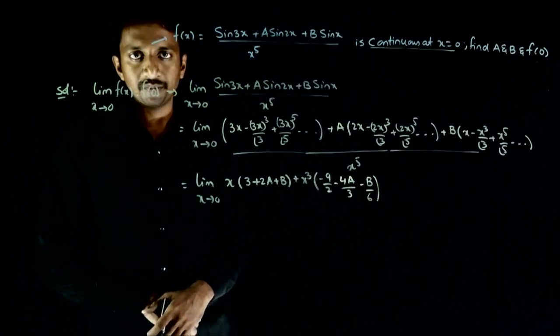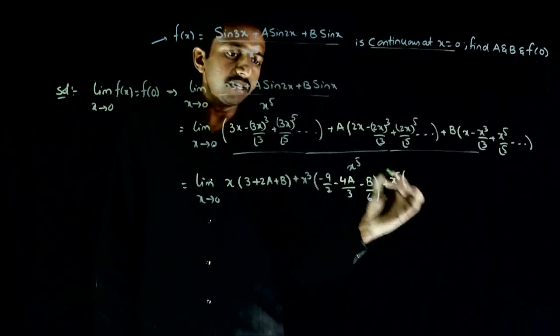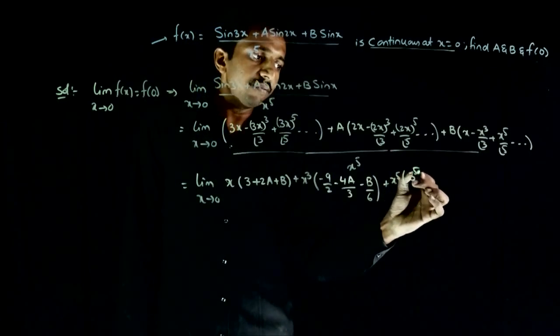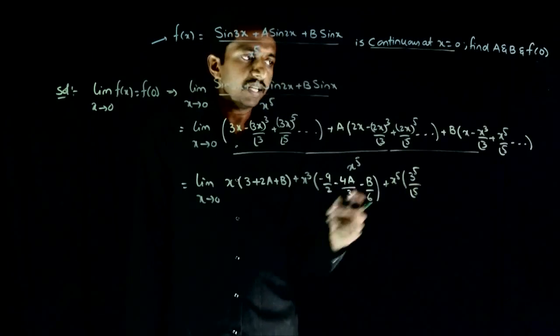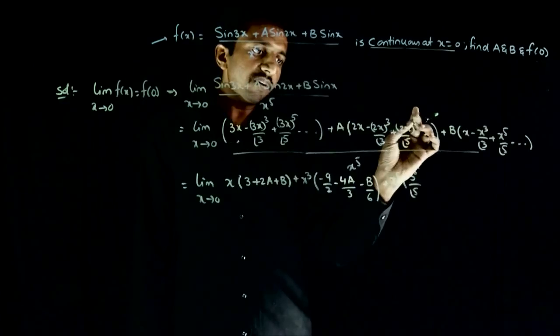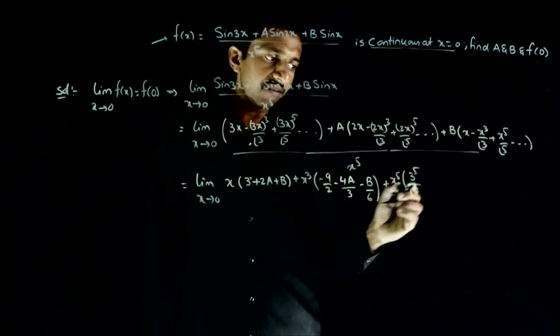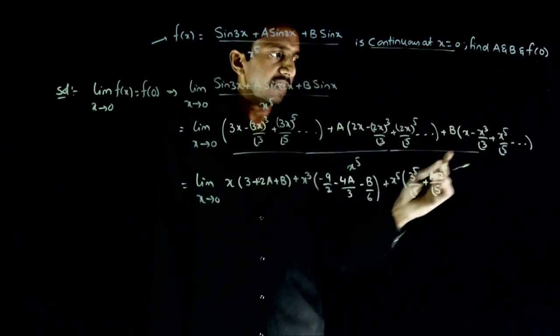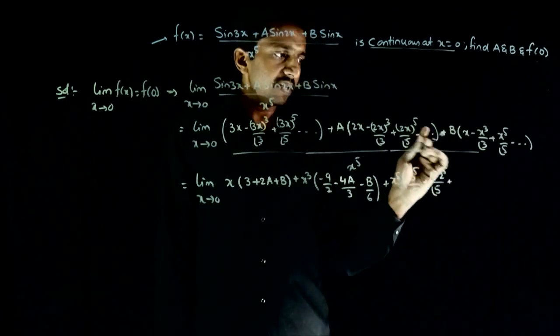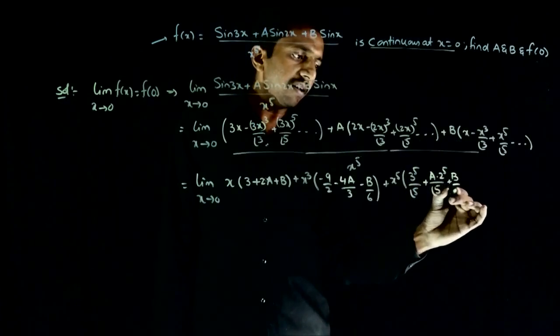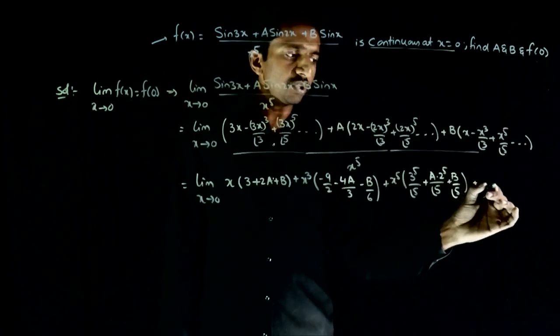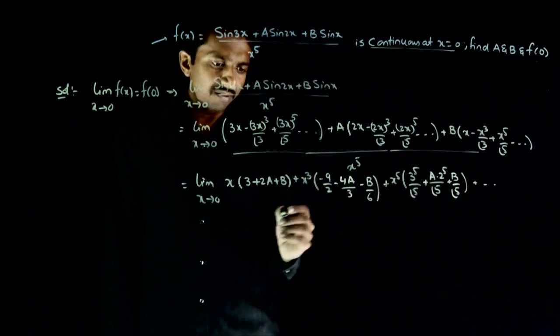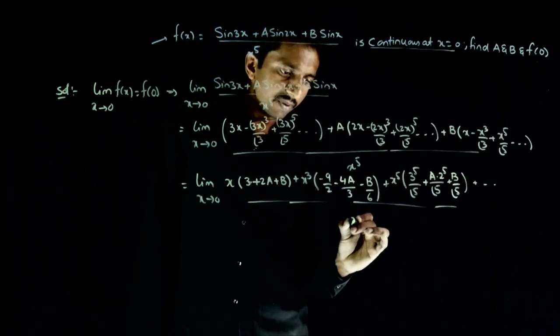After that, what is the coefficient of x power 5? 3 power 5 by 5 factorial. And next, 2 power 5 times a by 5 factorial. Plus a times 2 power 5 by 5 factorial. And lastly, here the coefficient of x power 5 is b by 5 factorial. Plus so on. After that there will be coefficient of x power 7, x power 9. I don't require all those. Divided by x power 5.